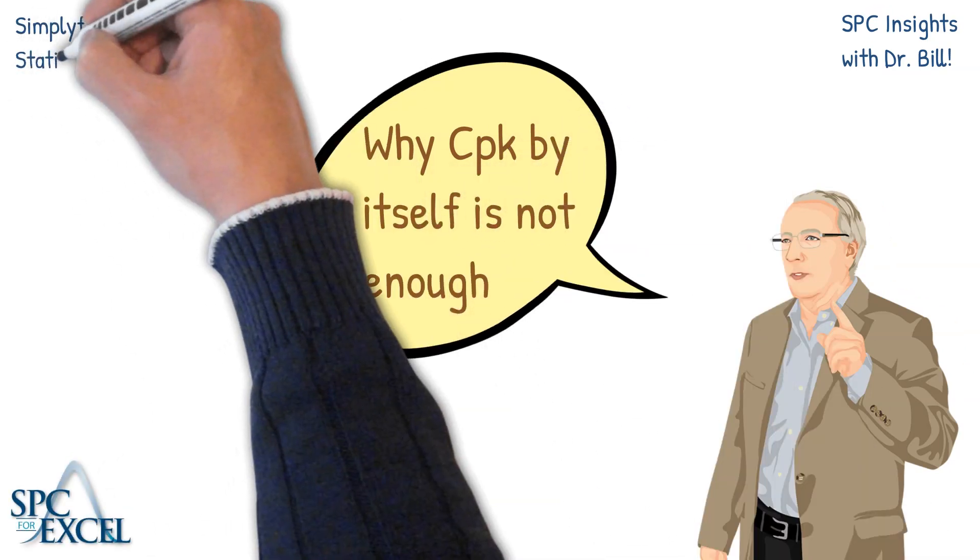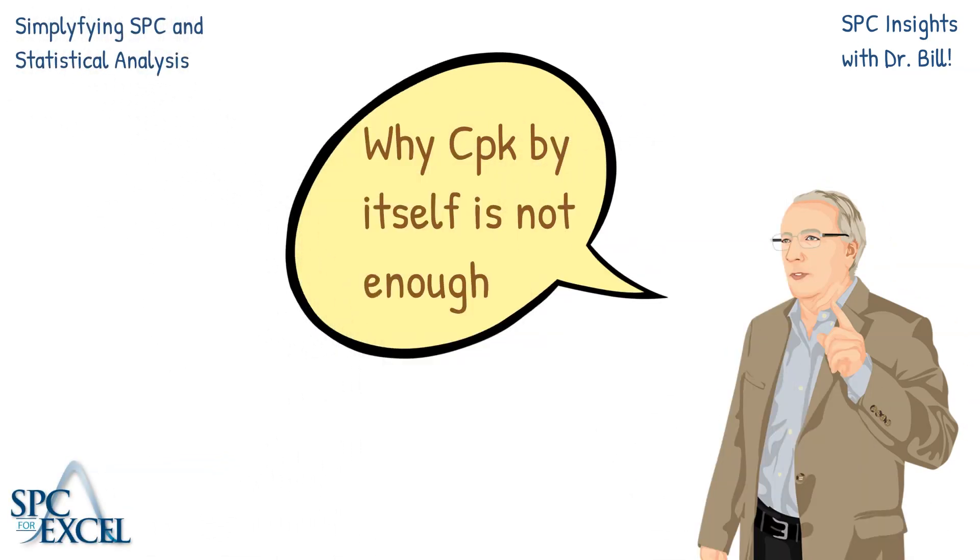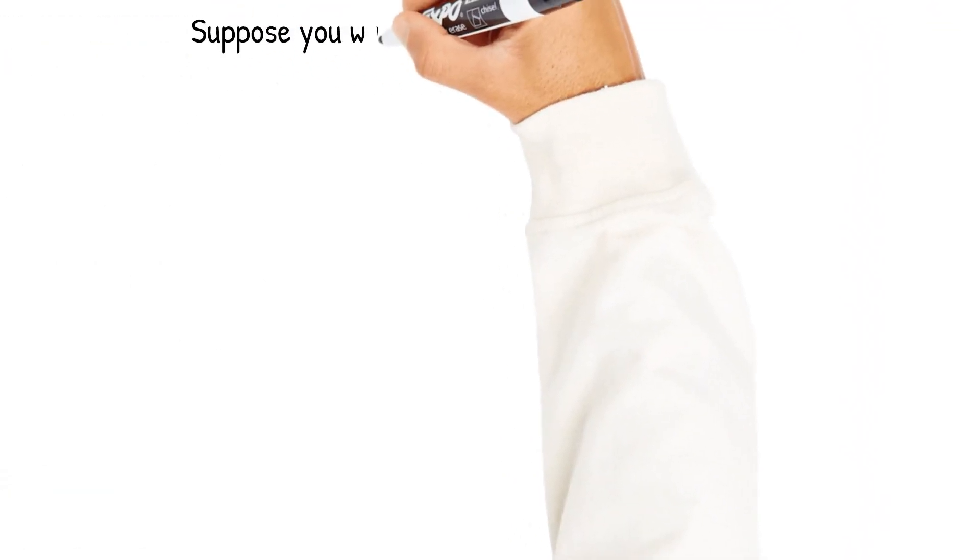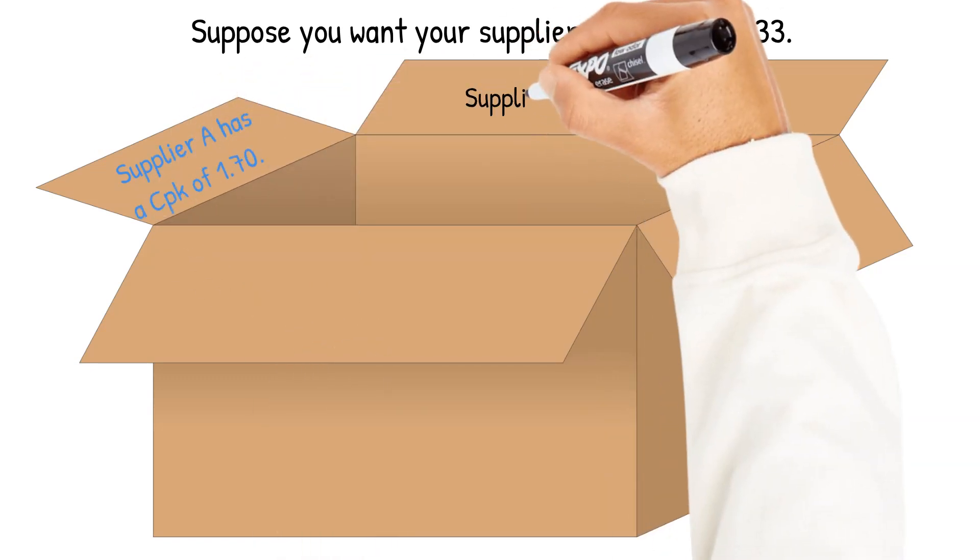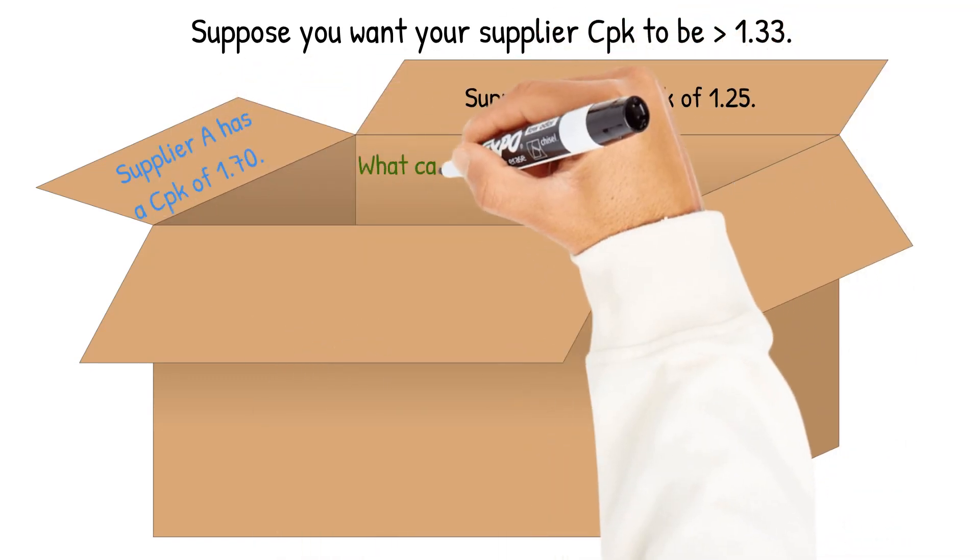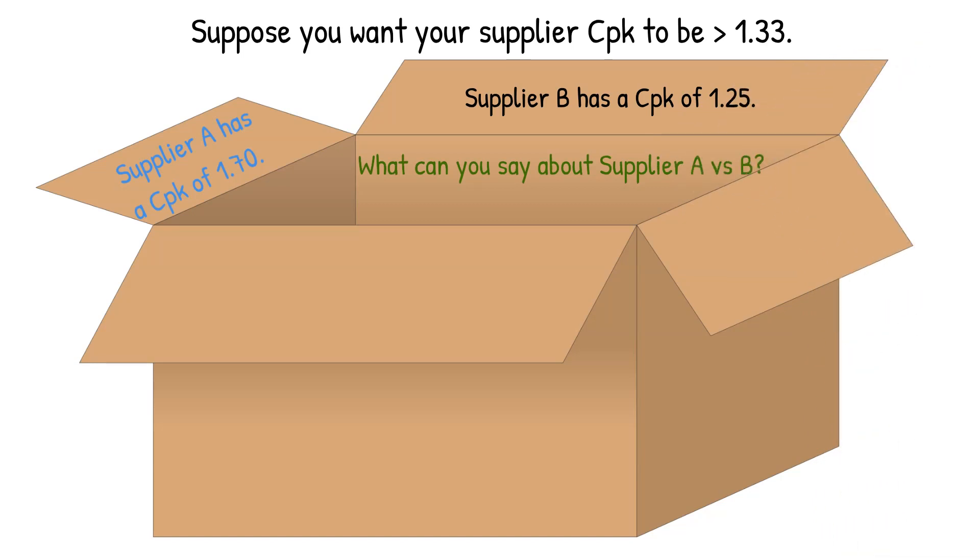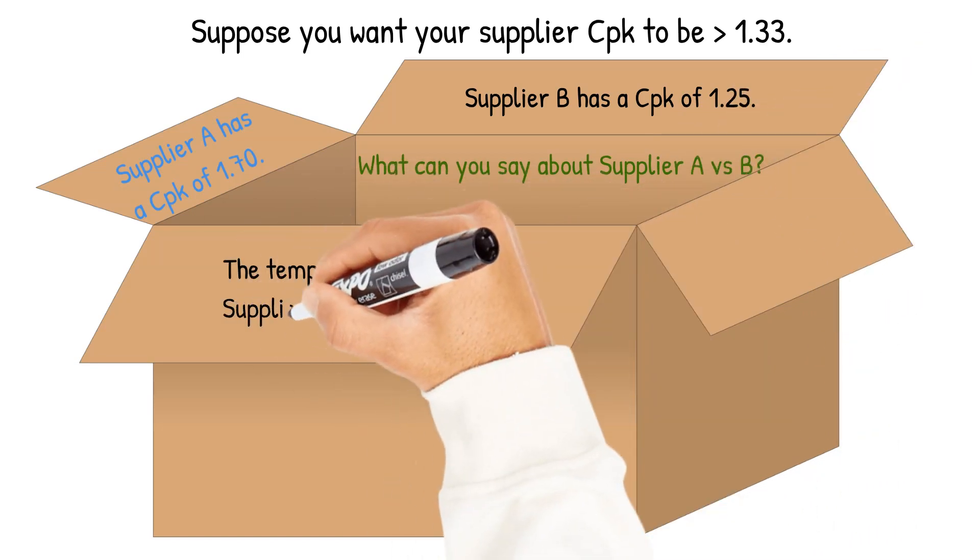This video is going to take a look at why CPK by itself is not enough when you're talking about process capability. Suppose you want your supplier CPK to be greater than 1.33. Supplier A has a CPK of 1.7. Supplier B has CPK of 1.25. What can you say about these two suppliers?